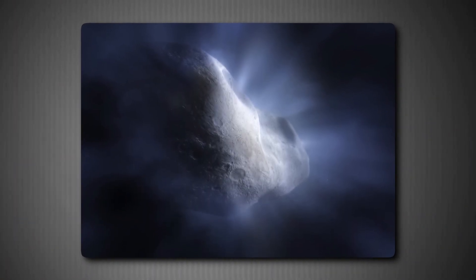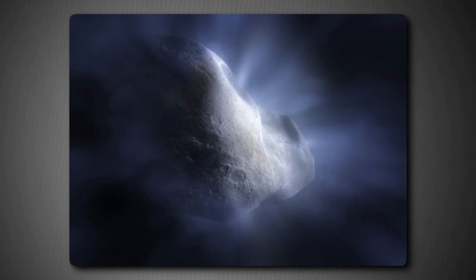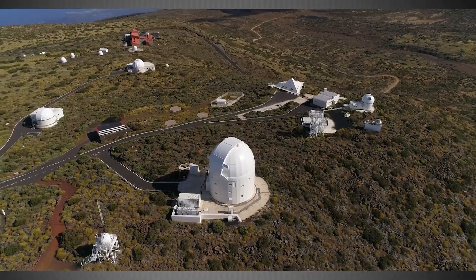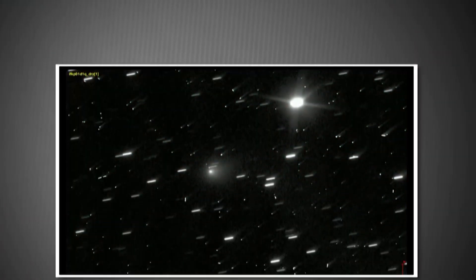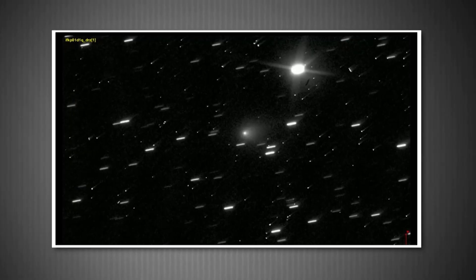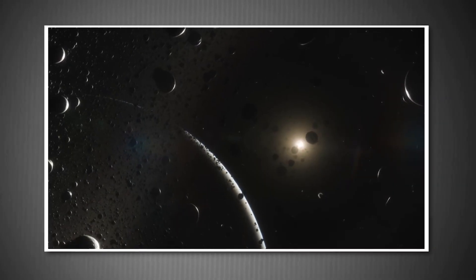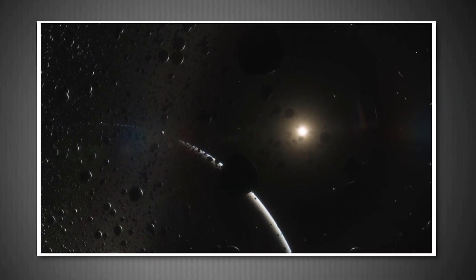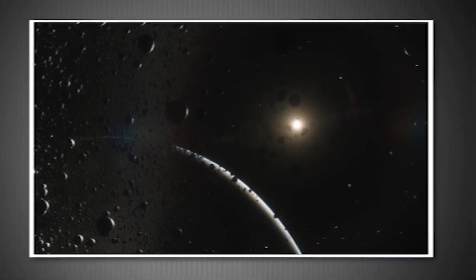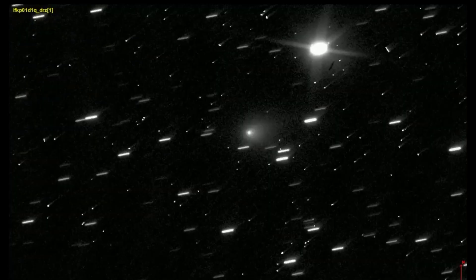This suggests that the star system where this comet formed might have been dramatically different from our own solar system. Perhaps it was much richer in carbon dioxide or perhaps unusual radiation processes stripped away other volatile compounds, leaving behind mostly CO2. The Webb observations also detected small amounts of water ice, water vapor, carbon monoxide, and carbonyl sulfide being released as the comet heats up. Meanwhile, observations from the European Southern Observatory's Very Large Telescope in Chile found that 3I ATLAS is emitting cyanide gas and atomic nickel vapor at concentrations similar to those seen in solar system comets. This composition is providing scientists with indirect clues about planet formation in other star systems. By understanding what 3I ATLAS is made of, we can infer the conditions in its parent star system billions of years ago.